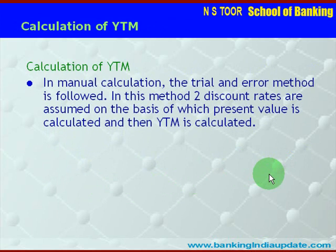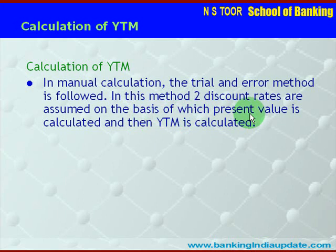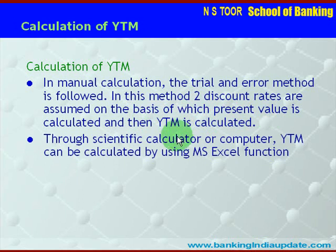Now, how to calculate YTM? YTM can be calculated manually through a trial and error method. We assume two different discount rates, calculate the present value at each, and then derive YTM. However, when we use a scientific calculator or a computer, YTM can be very easily and quickly calculated using an Excel function. Manual calculation takes a lot of time, whereas the Excel calculation is very fast.